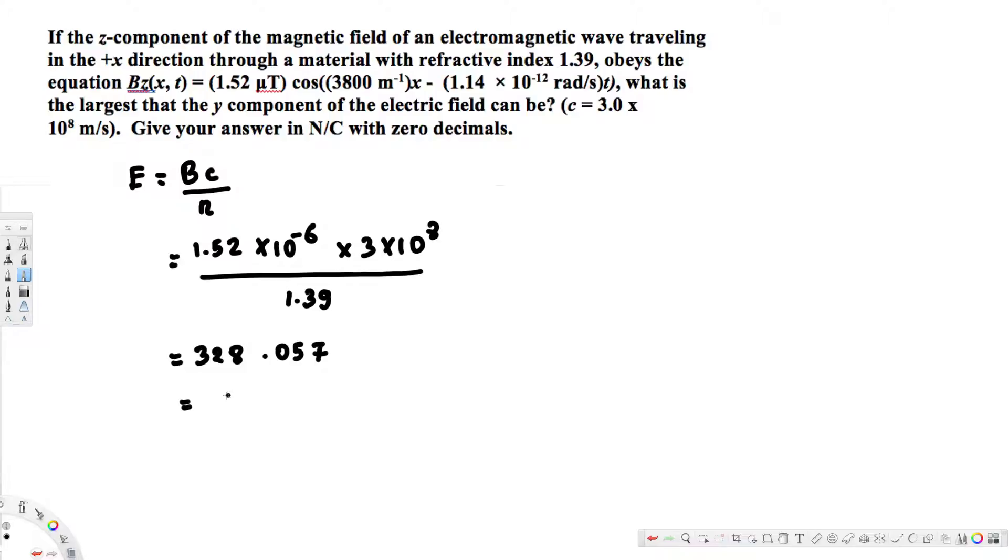If you calculate this one, you will get 328.057, in zero decimal places that's going to be just 328 newtons per coulomb, and that's going to be our final answer. I hope this helps, thanks for watching.